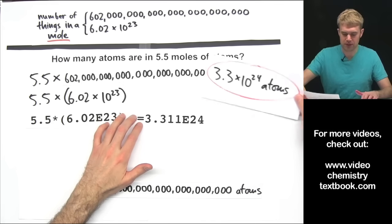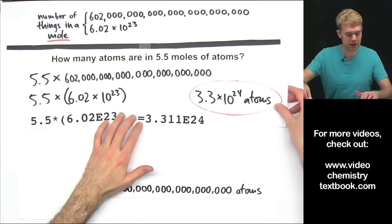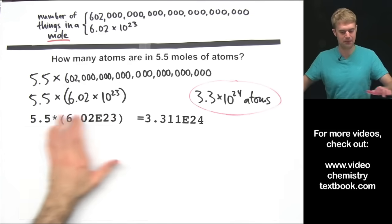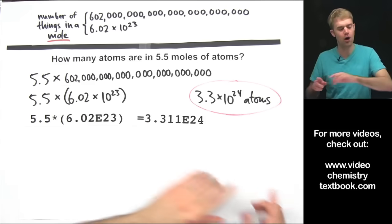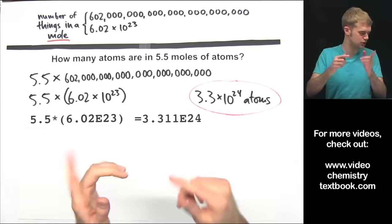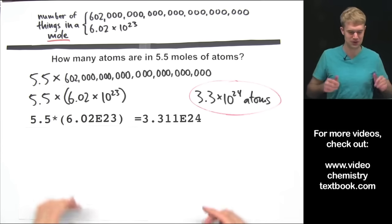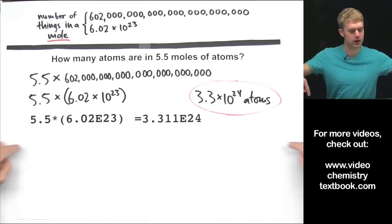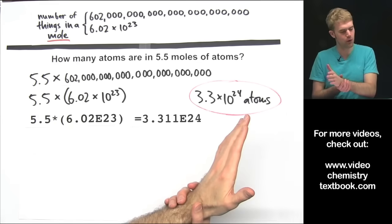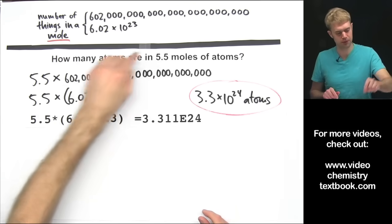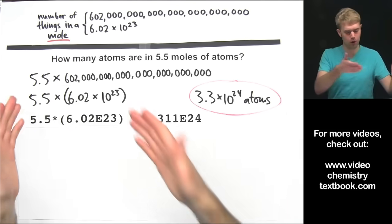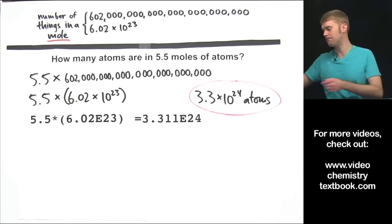If for some reason your teacher doesn't let you use a calculator and you have to do this by hand, I have another video on doing mole calculations by hand, so you can check that out. Anyway, this is how we do this problem using the simple, straightforward method — we multiply 5.5 by the number of things in one mole, plug it into the calculator, and this is what we get.